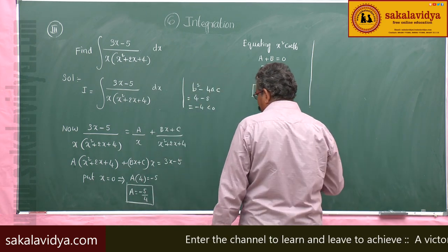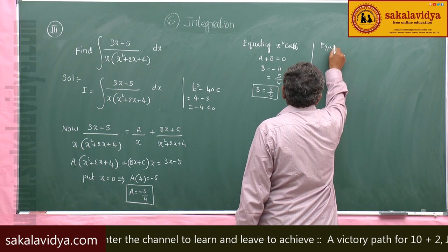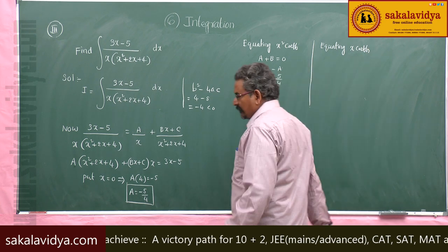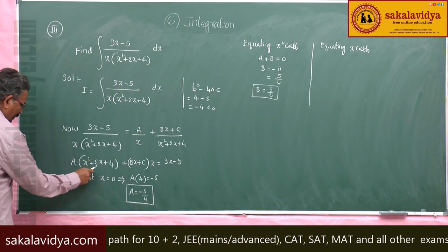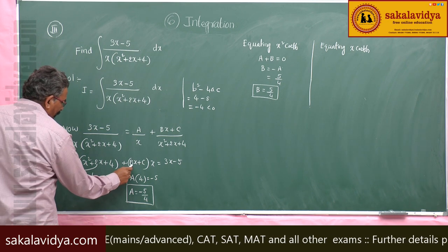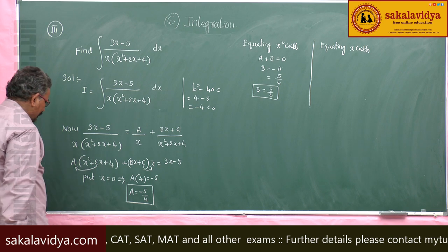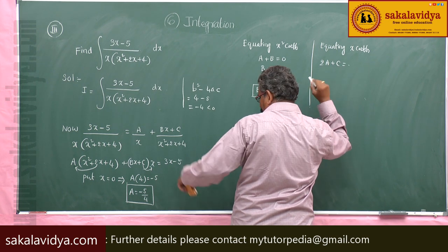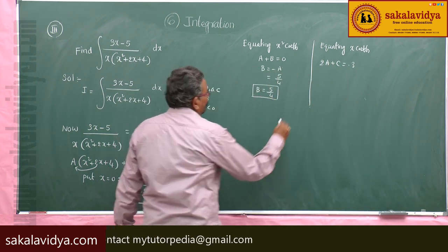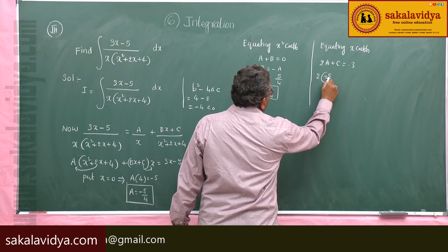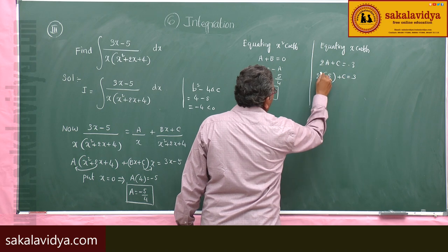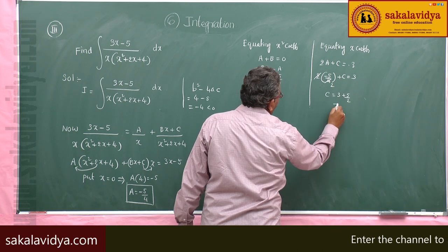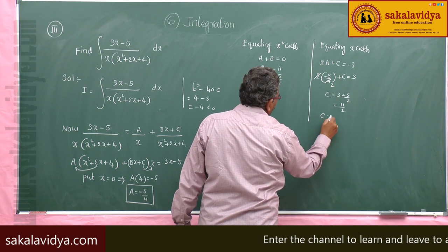Now equating the x coefficients: 2A plus C equals 3. Since A is minus φ over 4, we get 2A equals minus φ over 2, so C equals 3 plus φ over 2, which gives C equals 11 over 2.